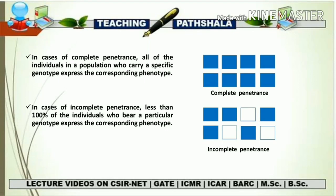So a dominant allele produces polydactyly in humans, but not all humans with this allele display the extra digit. Penetrance can be of two types: complete penetrance and incomplete penetrance. In complete penetrance, all individuals in a population who carry a specific genotype express the corresponding phenotype. In incomplete penetrance, less than 100% of individuals who bear a particular genotype express the corresponding phenotype — meaning all individuals have the gene, but only a few show the character corresponding to that gene.